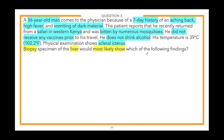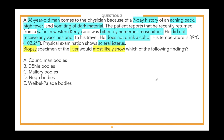Key clues: 36-year-old male with aching back, high fever, vomiting dark material over seven days, recently returned from Western Kenya, bitten by numerous mosquitoes, no pre-travel vaccines, and scleral icterus. We need to identify the diagnosis and then determine what a liver biopsy would show — a two-step question. Answer choices from the bottom: E) Weibel-Palade bodies, D) Negri bodies, C) Mallory bodies, B) Döhle bodies, A) Councilman bodies. With 46% selecting Councilman bodies, the correct answer is A — Councilman bodies.